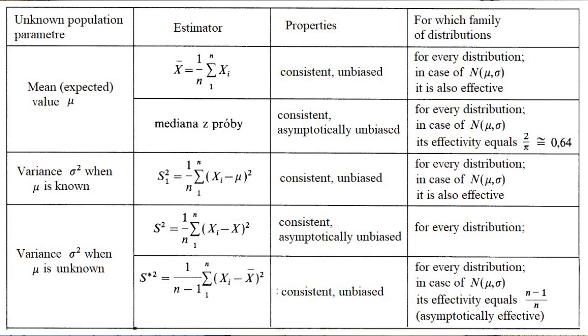Next thing is the variance sigma squared when the mu is known of the population. How do we estimate the variance? We can take s1 squared as 1 over n and sigma xi minus mu, the known mu squared. This way, we obtain consistent and unbiased estimator. Again, we can use it for any distribution. And we know that for normal distribution with parameters mu and sigma squared, it is also effective.